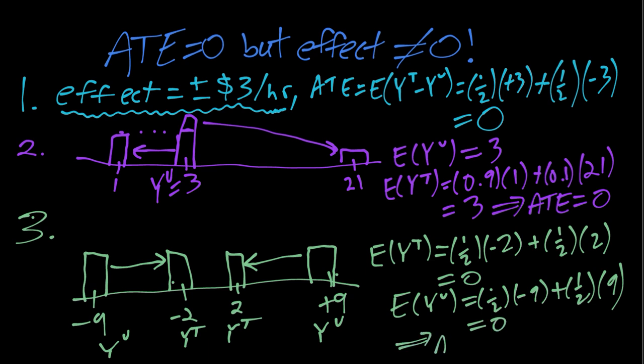So again our ATE is the difference of those mean potential outcomes, which is 0 minus 0 which is 0.